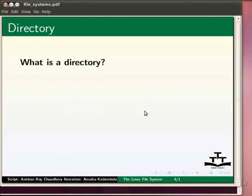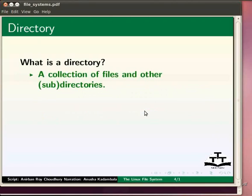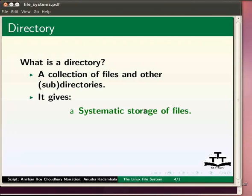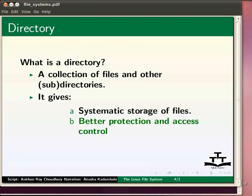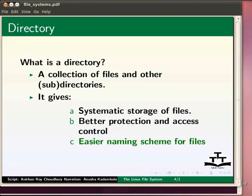Next, what is a directory? A directory can be understood as a collection of files and other subdirectories. A directory helps us in organizing our files in a systematic manner. This is like what we call folders in Windows. It allows different users to have their own directories with their files which others cannot access or modify. Also, if there are no directories, all the files on the system need to have unique names, which would be very difficult to maintain. Though these definitions of files and directories give a general feel, they are not entirely accurate.